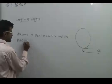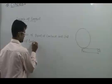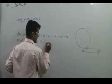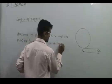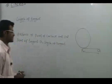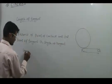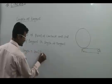The length of tangent refers to the distance from the external point to the point of contact. In this example, the length of tangent is PQ.